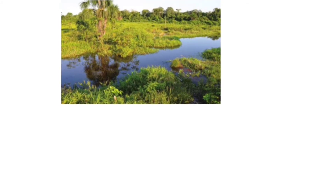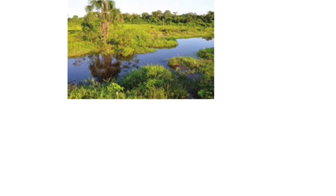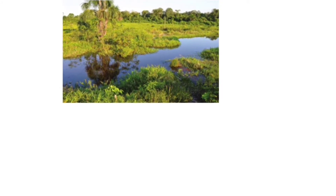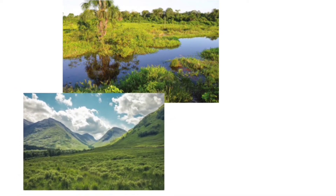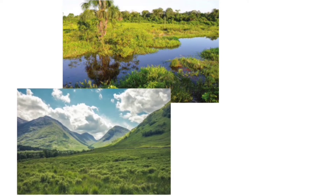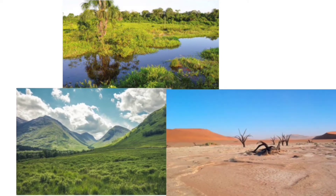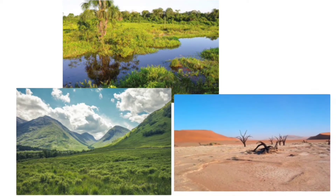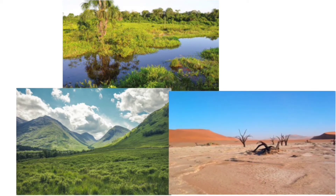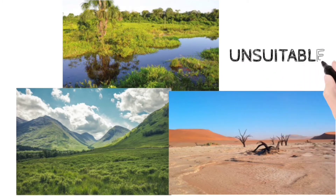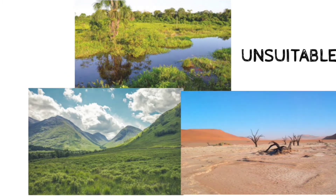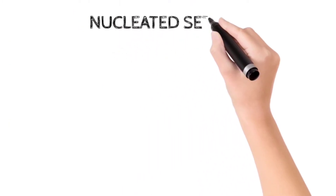Now let's see the unfavorable factors. One does not find a settlement where the land is unsuitable because of lack of certain resources or due to bad topography, which restricts growth and development. Such areas include swampy or marshy land, hilly areas where level land is scarce and steep slopes don't encourage construction, and desert areas where sandy soil and lack of moisture cannot provide water and food for survival. Based on these factors, different settlement patterns are developed.